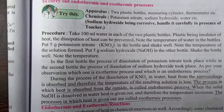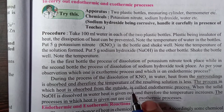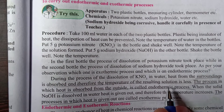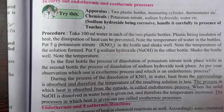During the process of dissolution of KNO3 in water, heat from the surroundings is absorbed and therefore the temperature of the resulting solution is less. The process in which heat is absorbed from outside is called an endothermic process. When solid NaOH is dissolved in water, heat is given out and the temperature increases. The processes in which heat is given out are called exothermic processes.